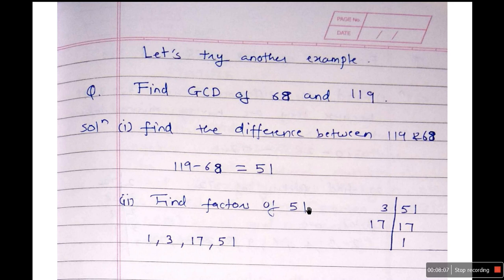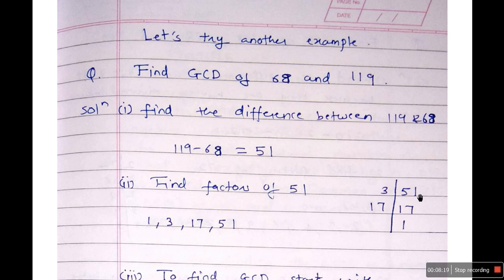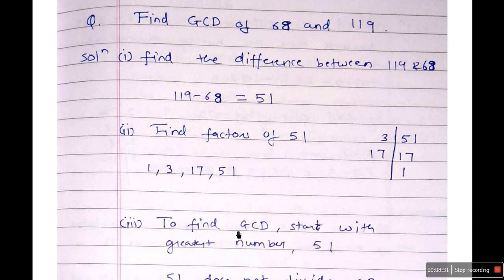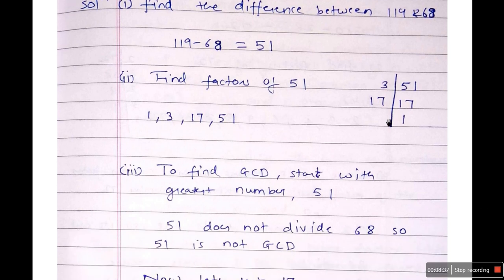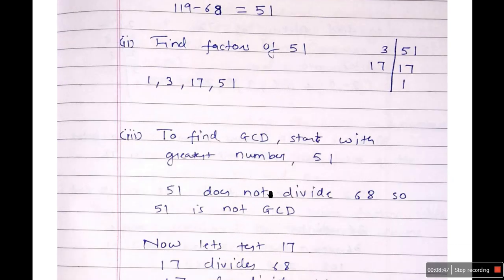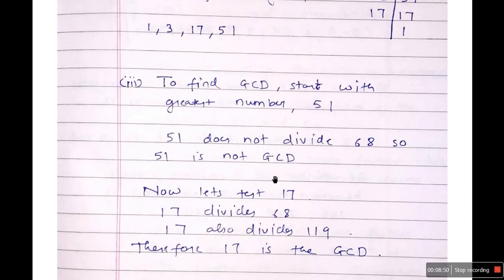Another example: find the GCD of 68 and 119. Using the shortcut method, find the difference between 119 and 68, which is 51. Now find the factors of 51: 51 ÷ 3 = 17; 17 ÷ 17 = 1 (17 is prime). So factors are 1, 3, 17, and 51. Starting from the highest — 51 does not divide 68, so it's out. The next highest is 17: 17 divides 68, and 17 divides 119. Therefore, 17 is the GCD.